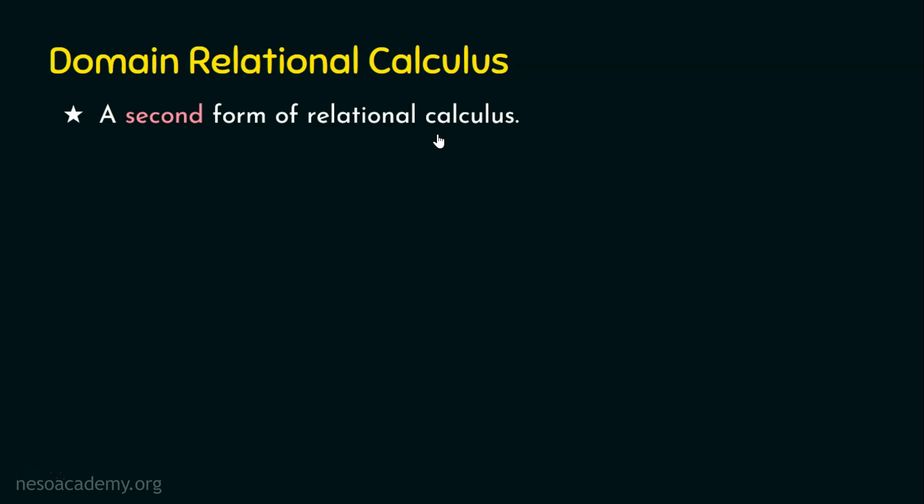So how does tuple relational calculus differ from domain relational calculus? In domain relational calculus, we focus on domain variables — in other words, we focus on the columns or attributes by setting domain variables. Things may be unclear at this moment, but once we see the formal definition it will be easy to understand. Tuple relational calculus retrieves data row by row, whereas domain relational calculus retrieves data column by column. The final output is still a relation containing rows and columns.